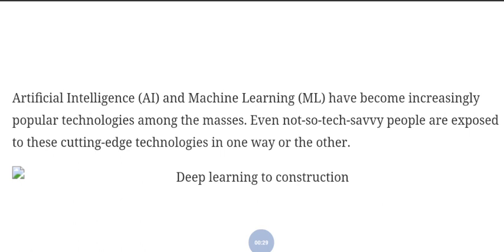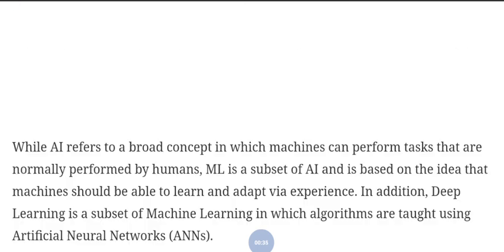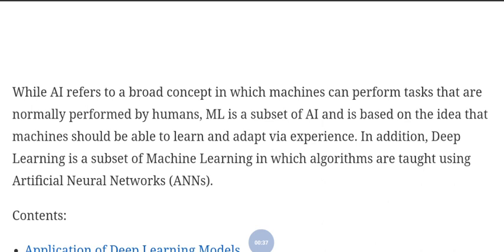AI refers to a broad concept in which machines can perform tasks that are normally performed by humans. Machine learning is a subset of artificial intelligence and is based on the idea that machines should be able to learn and adapt from their experience. In addition, deep learning is a subset of machine learning.